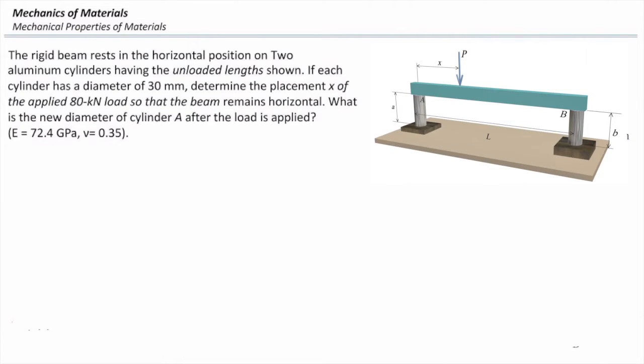The rigid beam rests in a horizontal position on two aluminum cylinders having the unloaded length shown. So these lengths are before applying the load.